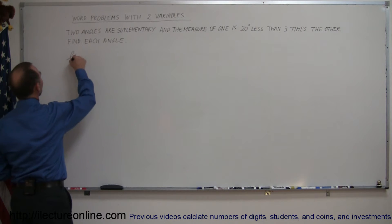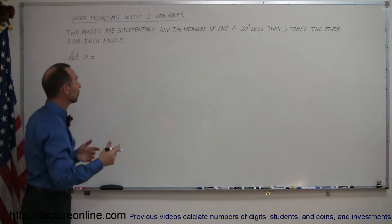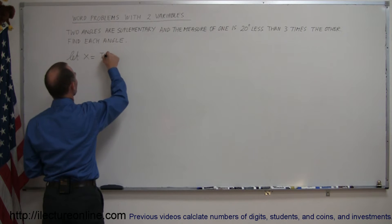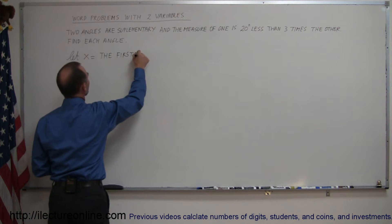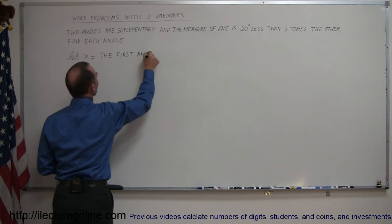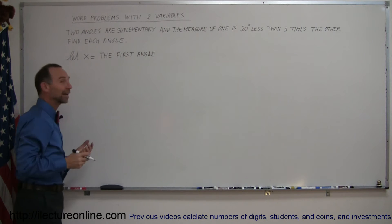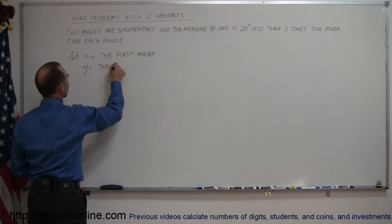So we write, let x equal the first angle. Or one angle, or whatever you want to call it. And so, if x equals the first angle, then let y equal the second angle. There's two angles.